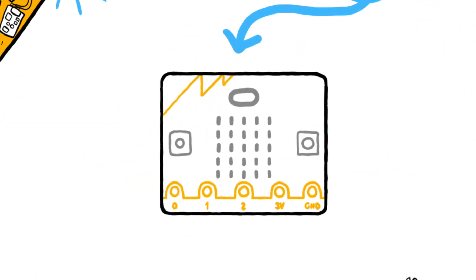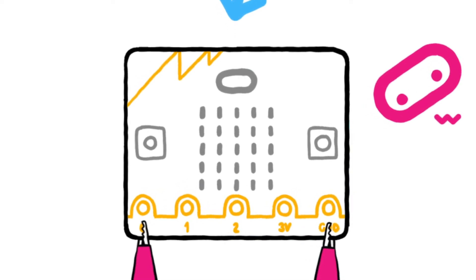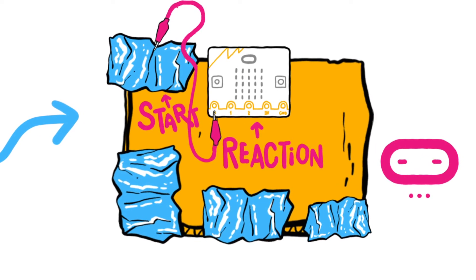For example, by connecting the crocodile clips to the pins on the edge connector, you can create different types of circuits. If you add some scrap cardboard and aluminum foil, you can make your very own reaction game.